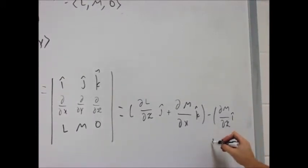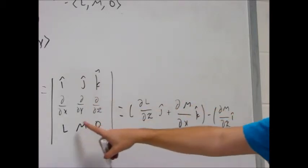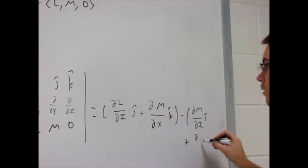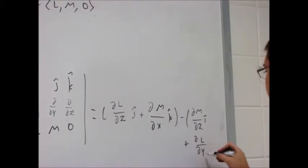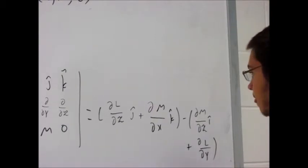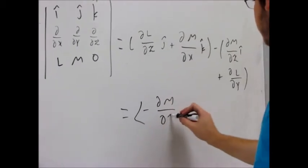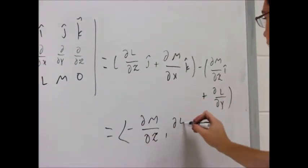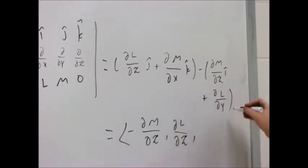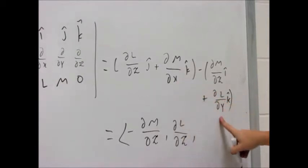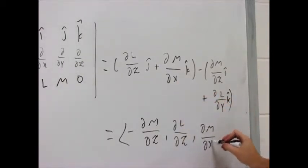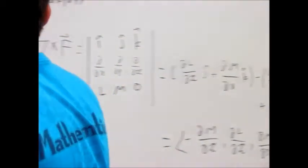I plus j would be zero, zero, and k would be partial L with respect to y. Or well, the i component is negative partial M partial z. J is this, partial L partial z. And k, which was k, is this minus this, partial M partial x minus partial L with respect to y. So that's the curl of f if f is just L, M, zero.